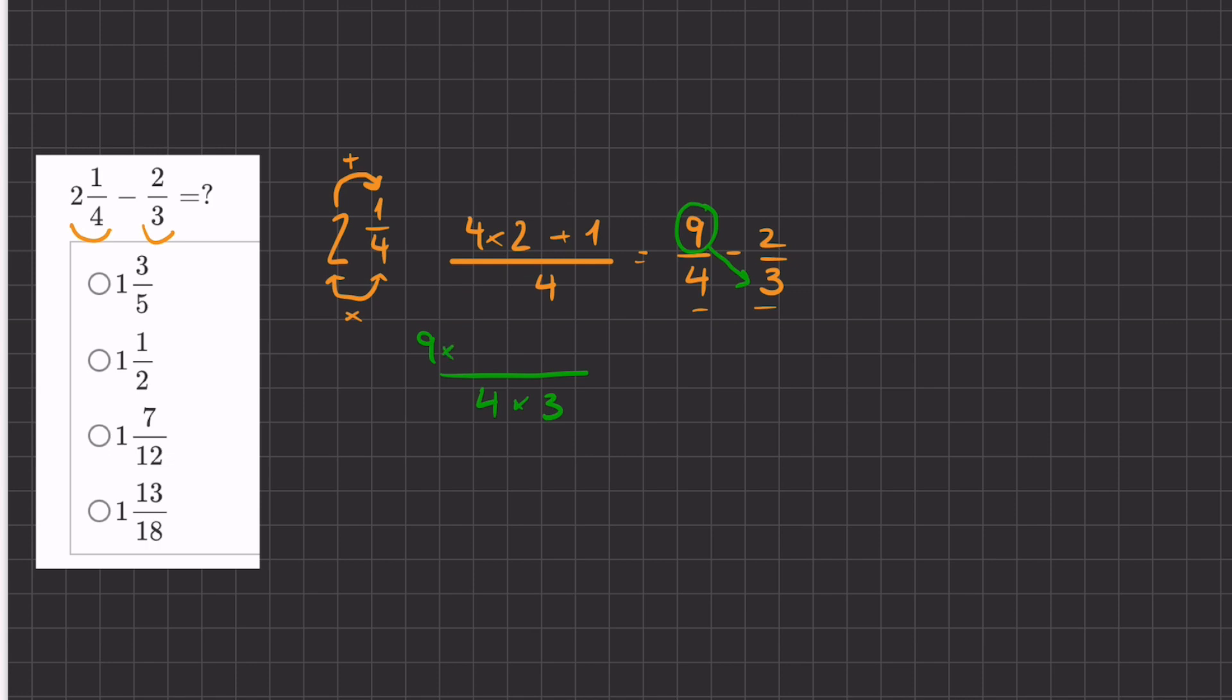So we have 9 times 3 minus 2 times 4. And so now we have 27 minus 8 all over 12. And now it's just simple subtraction. We have 27 minus 8 which will give us 19 over 12.